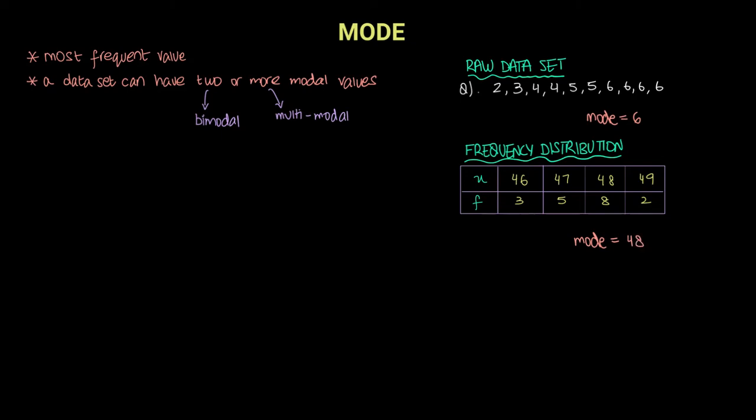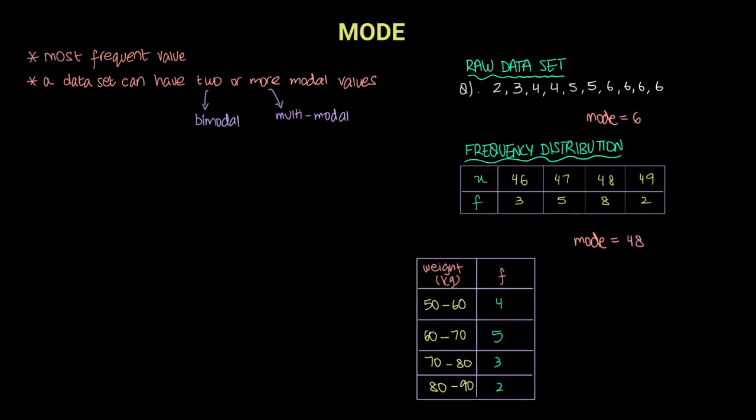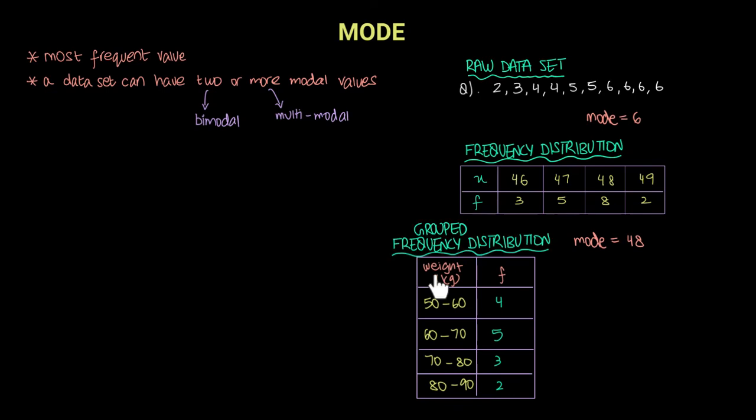Now for a grouped frequency distribution, we have our classes over here and their respective frequencies. In order to calculate the mode for a grouped frequency distribution, we will look at that class which has the highest frequency.